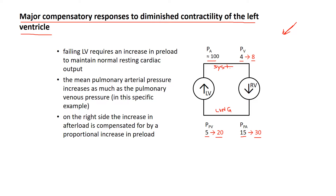I've made a simplifying assumption here: the preload on the left ventricle builds up enough to maintain the same afterload and resting cardiac output as before the insult — so the same 100 mmHg on the systemic arterial side. In reality the patient might be worse off than that, but let's keep things simple to wrap our heads around this.